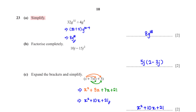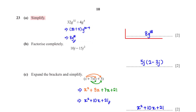Simplify 32g to the power 32 divided by 4g to the power 4. We have 32 divided by 4, and since the g terms are also dividing, we subtract their powers: g to the power 32 minus 4. 32 minus 4 is 28 and 32 divided by 4 is 8. So our final answer is 8g to the power 28.